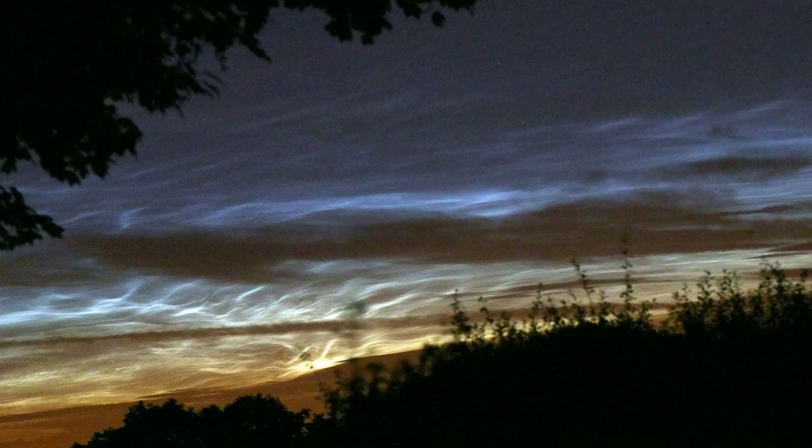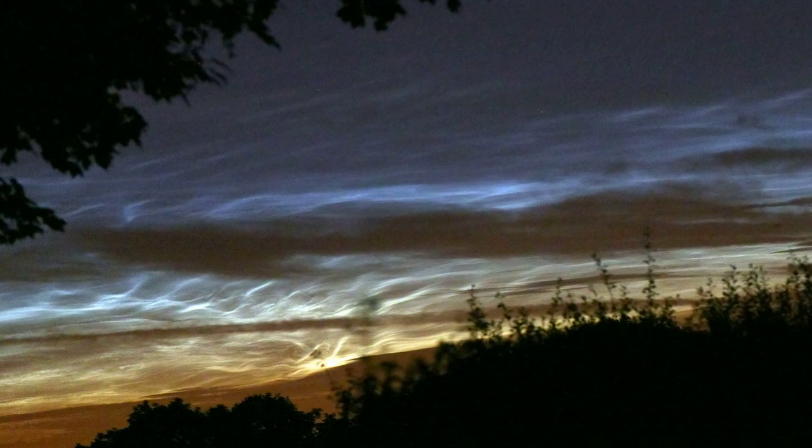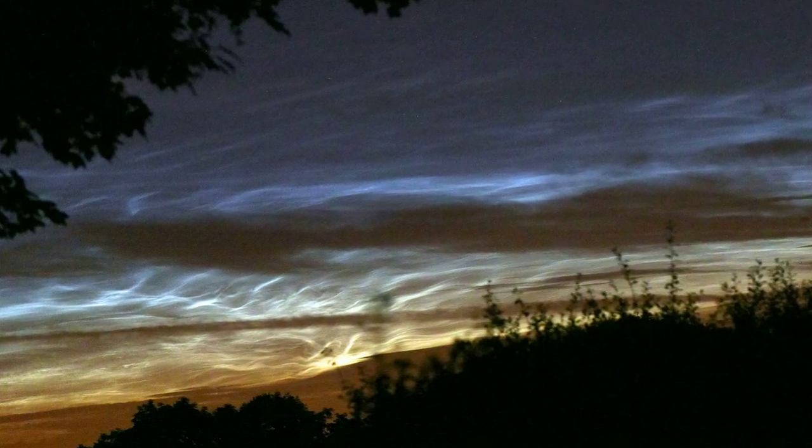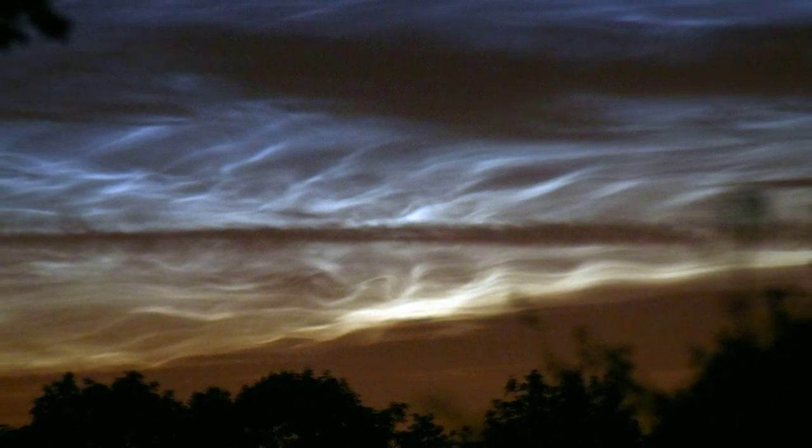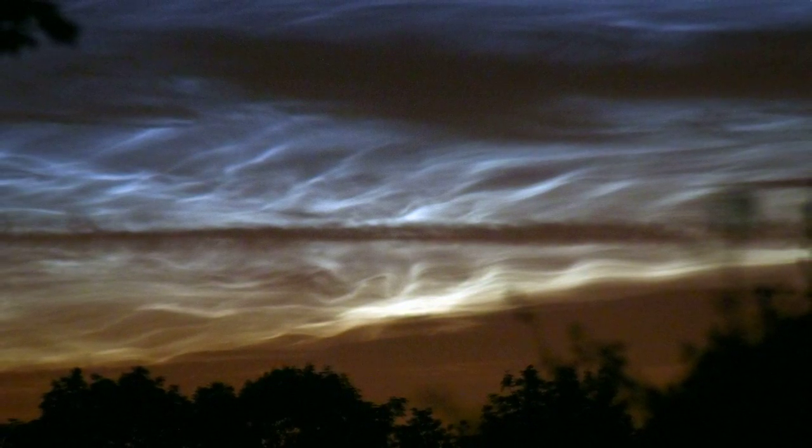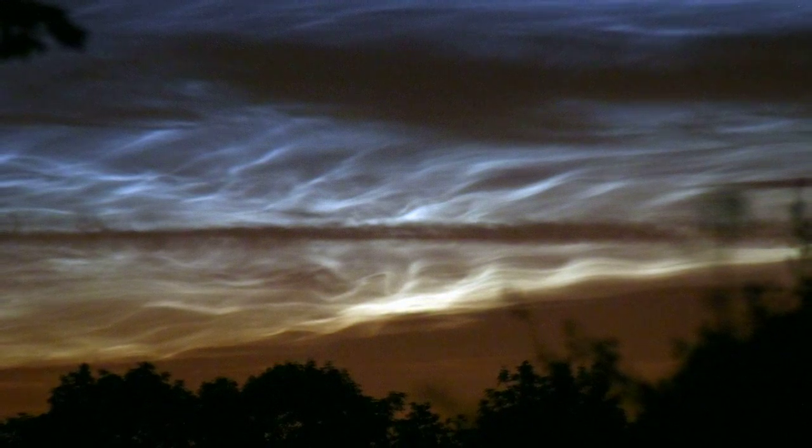They do this because they're extremely high in our atmosphere, meaning that they can reflect the light from the sun quite a while after it has set or before it rises. You'll know you're looking at a noctilucent cloud because they appear to shine against the brighter twilight sky, whereas your run-of-the-mill clouds tend to appear in silhouette.